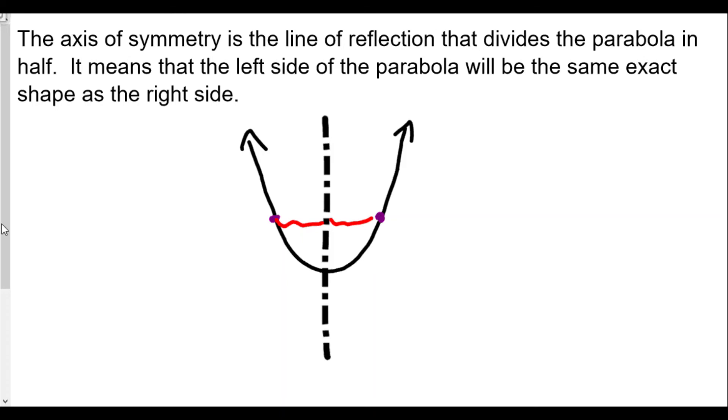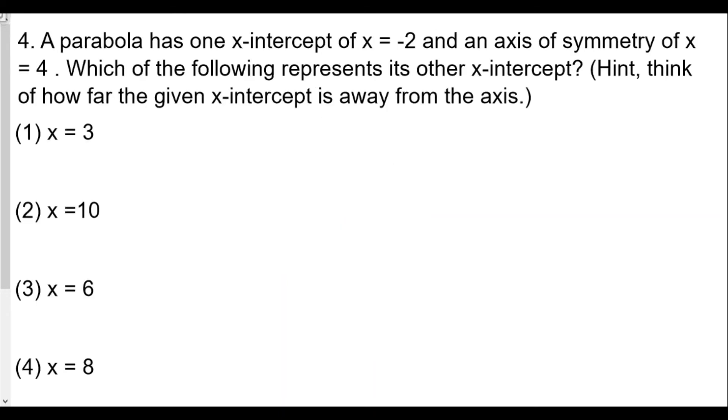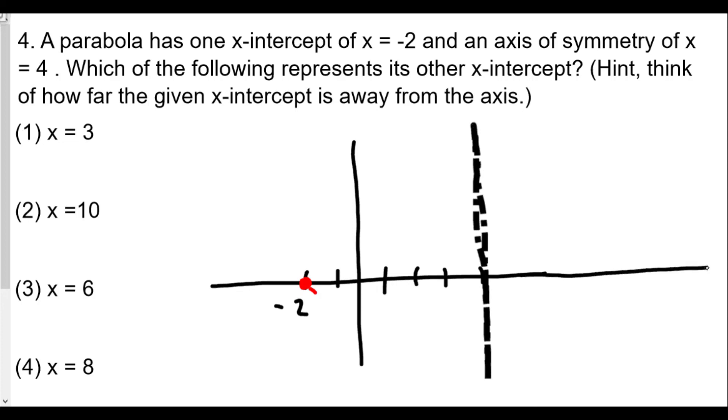If we know one of the roots, going back to the question, if we know one of the x-intercepts is negative two, let's sketch this. If one of the x-intercepts is negative two, that's where the graph is going to cross the x-axis. The axis of symmetry is four. One, two, three, four. Draw our axis of symmetry down this way. In this case, the other point on this graph will be equal distance away. We see the distance from negative two to four will be six.